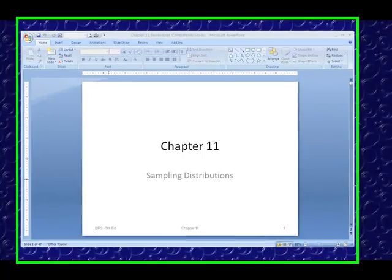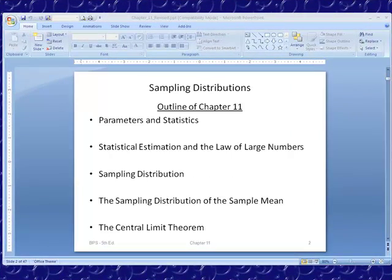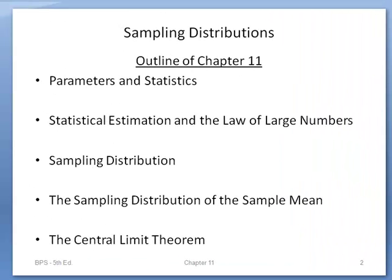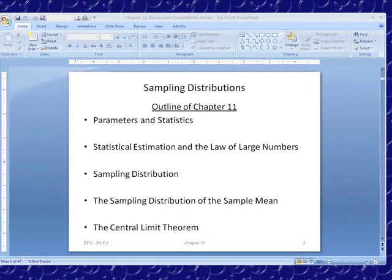We're going to go into what's called sampling distributions. In this chapter, we're going to be going over parameters and statistics again, statistical estimation and the law of large numbers, a sampling distribution, and specifically the sampling distribution of the sample mean, and go over the central limit theorem.